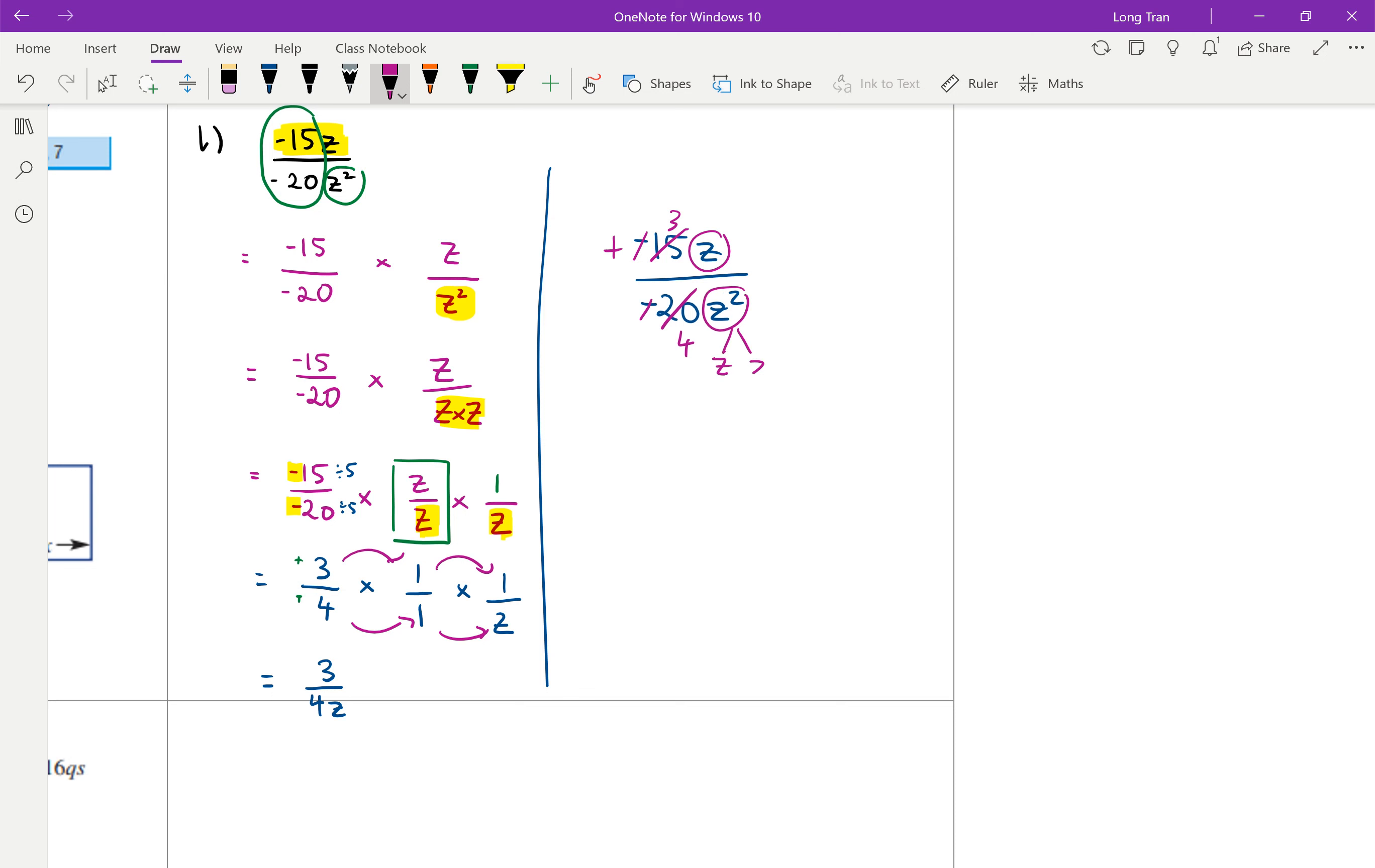And then since you only have one z on the top, and you've got two z's on the bottom, because that means z times z, you can cancel one of the z's out. And so you end up writing your answer as 3 over 4z. So your answer ends up being 3 over 4z.